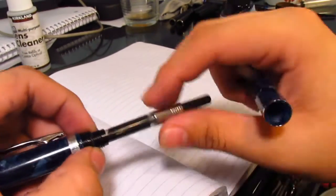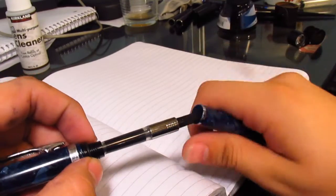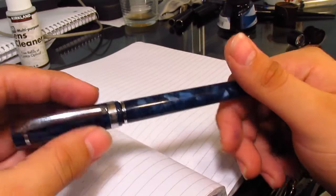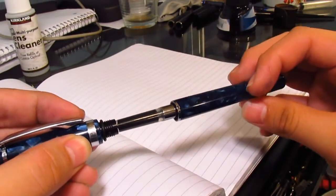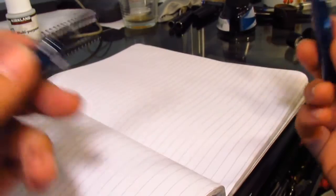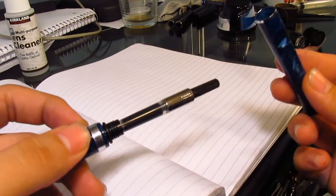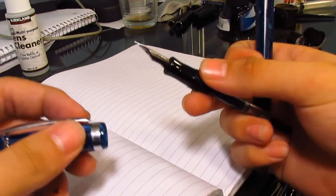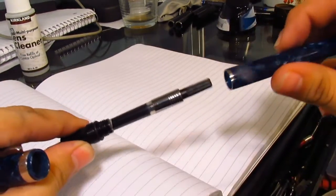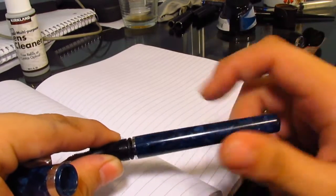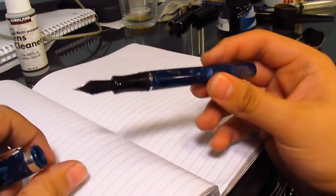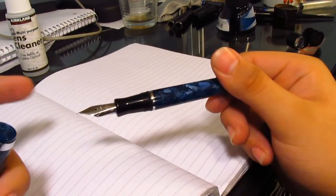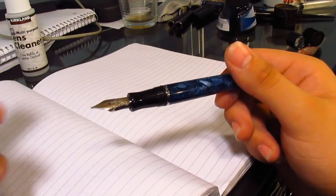So rather than you unscrewing the cap, the barrel will just start unscrewing. So you'll have this, and I just filled my pen by the way. So you have this kind of thing where you'll unscrew and that's what will happen, and then you're left with a section and a barrel. So then you have to go and unscrew your cap and screw your barrel back in.